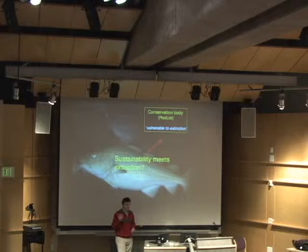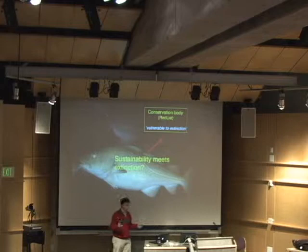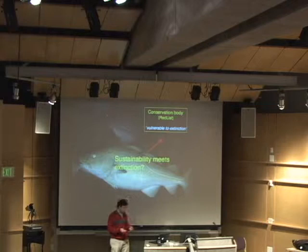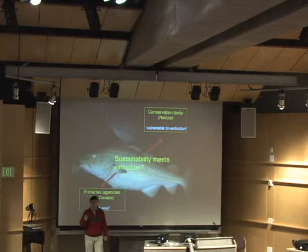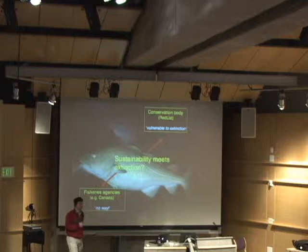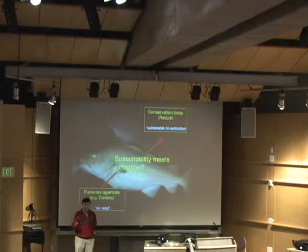Because the IUCN — the world body which has been responsible for the global threat status of species around the world — declared in 1996 that the Atlantic cod was vulnerable to extinction. So this isn't an academic thing — this went down as being vulnerable to extinction. And that caused an uproar in fisheries management agencies, including especially Canada. The Department of Fisheries and Oceans basically said, 'No way.' I was in England at the time when this happened, and I was rather embarrassed by the government of my homeland, which came out and threatened the IUCN with all manner of nasty behavior.